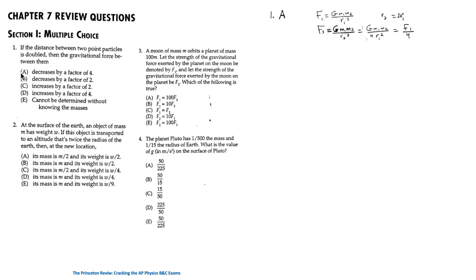The answer is A — it will decrease by a factor of four. Initially, the gravitational force is F1 = G·m1·m2 / r1². When the distance is doubled, r2 = 2r1, so F2 = G·m1·m2 / (2r1)² = G·m1·m2 / 4r1². Therefore F2 = F1 / 4.